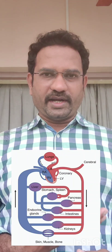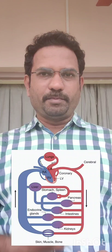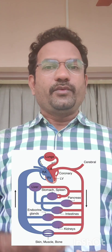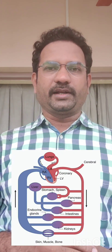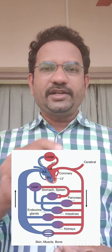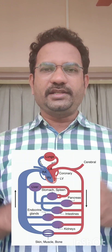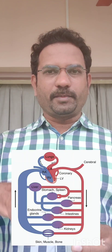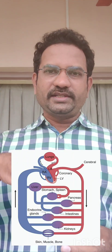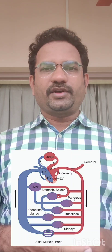When the right ventricle contracts, the blood is drained to the lungs with the help of the pulmonary artery. So this pulmonary artery carries deoxygenated blood and drains it to the lungs. In the lungs, gas exchange occurs — the carbon dioxide from the blood is drained out and oxygen is exchanged into it. So the blood now contains oxygen, and this oxygenated blood gets into the left atrium via pulmonary veins.